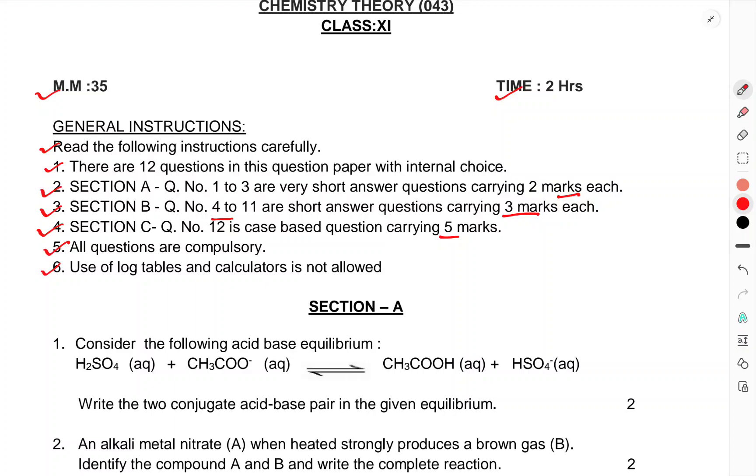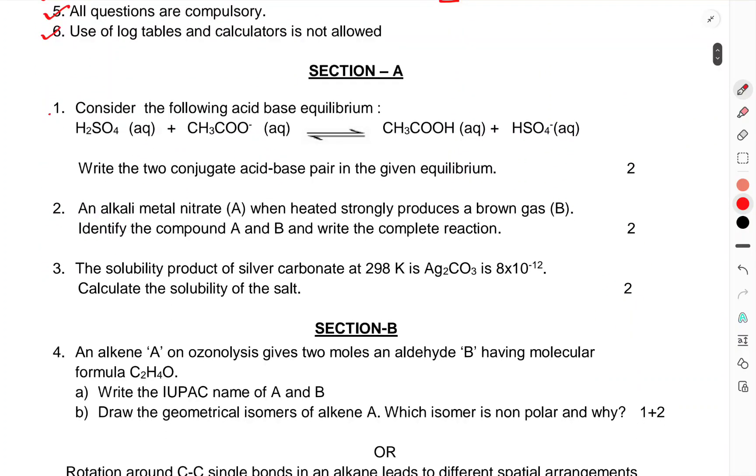All questions are compulsory. Use of log tables and calculators is not allowed. Section A: Consider the following acid base equilibrium. Write the two conjugate acid base pairs in the given equilibrium.